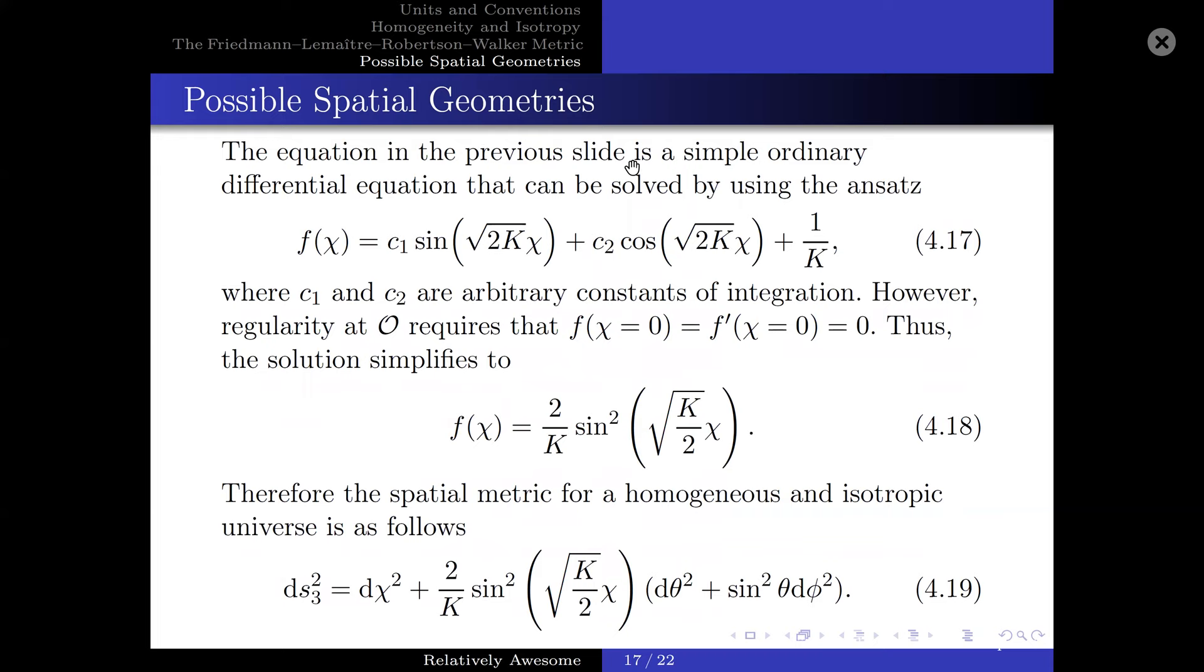From the equation in the previous slide, the differential equation has the following ansatz, where C_1 and C_2 are some arbitrary constants of integration. However, since regularity at O requires that f(0) and f'(0) equals zero, thus the solution simplifies to the following. And therefore, the spatial metric for a homogeneous and isotropic universe is as follows.